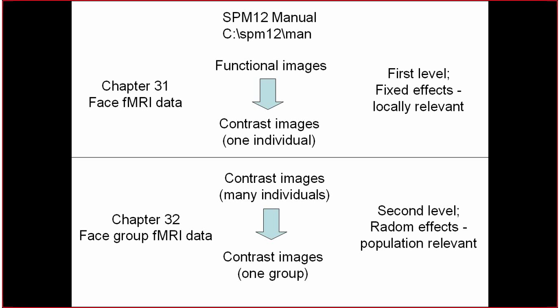I'll get to the difference between contrast and beta a bit later — contrast can be equivalent to beta in some cases. All of this is just for one individual. After the results of multiple subjects from the same experiment are used in Chapter 32, you take not the functional images but the contrast images generated for each subject at the previous level, use those contrast images for the second-level analysis, and get contrast and statistical images for the group, not the individual.